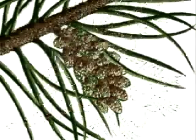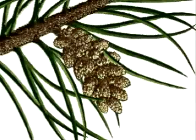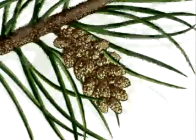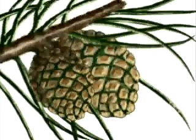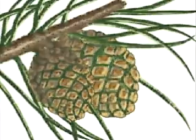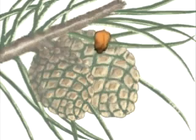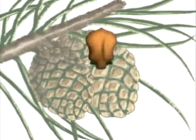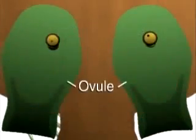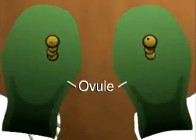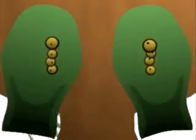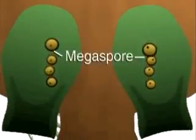The adult sporophyte, the pine tree, develops male and female cones on separate branches. Female cones develop two ovules on the upper surface of each cone scale. Each ovule contains haploid megaspores.